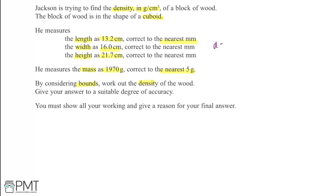Density equals mass divided by volume, so we need upper and lower bounds for density. The upper bound for density occurs when the numerator (mass) is at its highest and the denominator (volume) is at its lowest. The lower bound for density is the opposite: the lower bound for mass divided by the upper bound for volume. So we need to find the upper and lower bounds for both mass and volume.